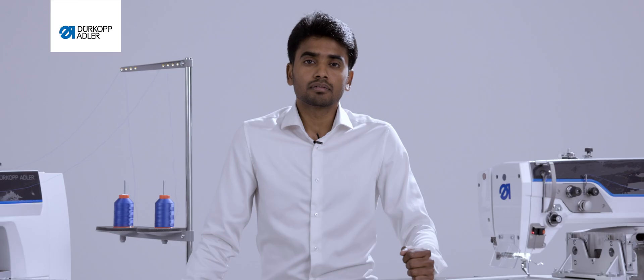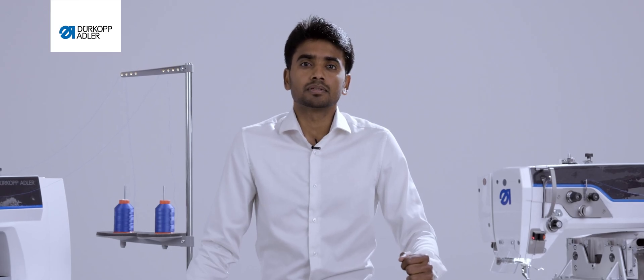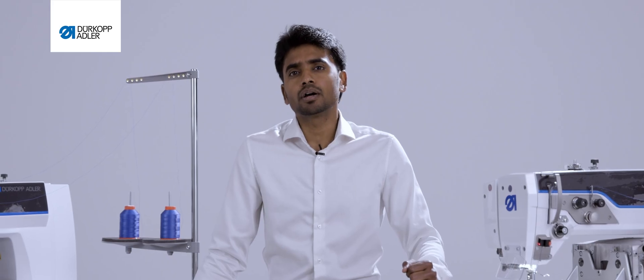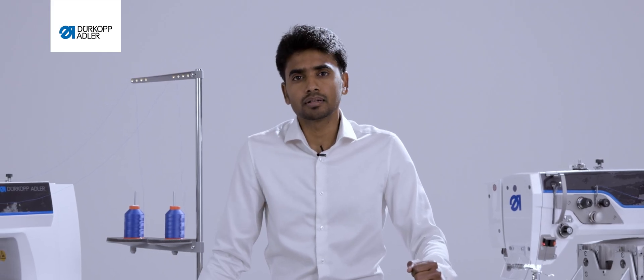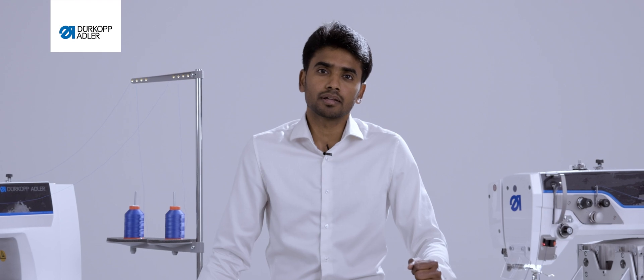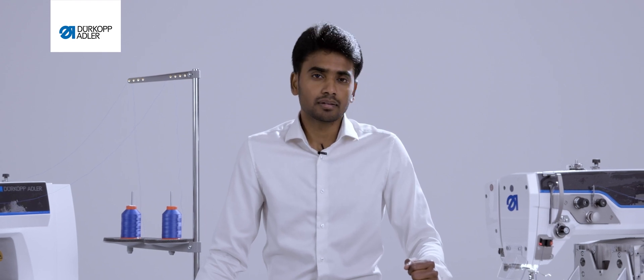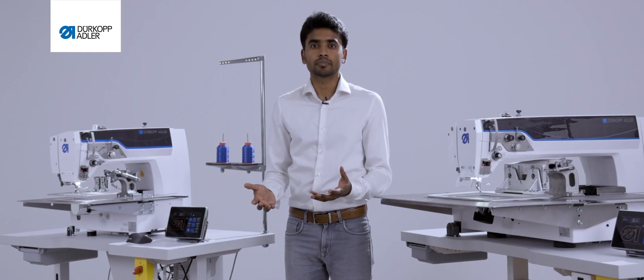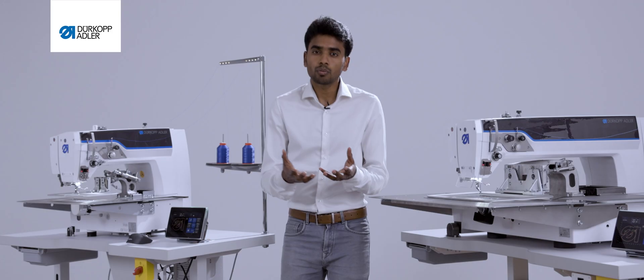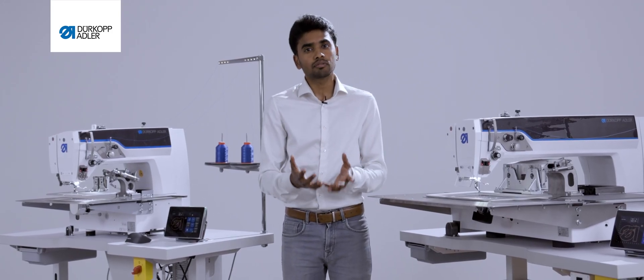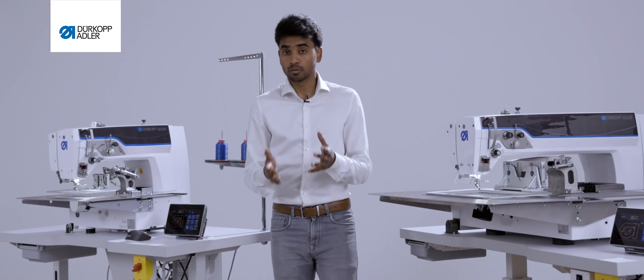There was another question from our customers, mainly from the production managers. They said, how do I know who is accessing my machine? Until today, nobody is offering the security to me to say if it's person A or person B. Anyone can switch it on and start sewing. I do not want that. I do not want my operator to change some of my parameters which is allowed only for the technicians. We said, don't worry.